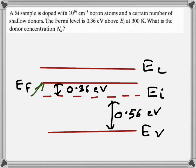The silicon sample is doped with 10 to the power 16 per centimeter cube boron atoms. Boron atoms are acceptor atoms and a certain number of shallow donor atoms. The concentration is not given, we actually have to find that. The Fermi level is 0.36 electron volt above Ei.